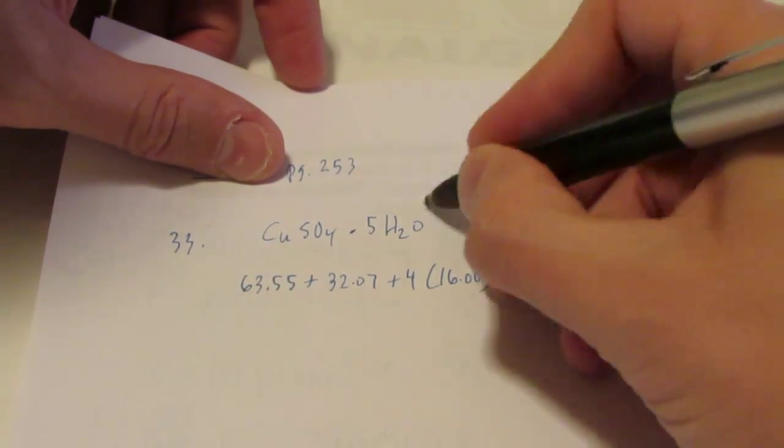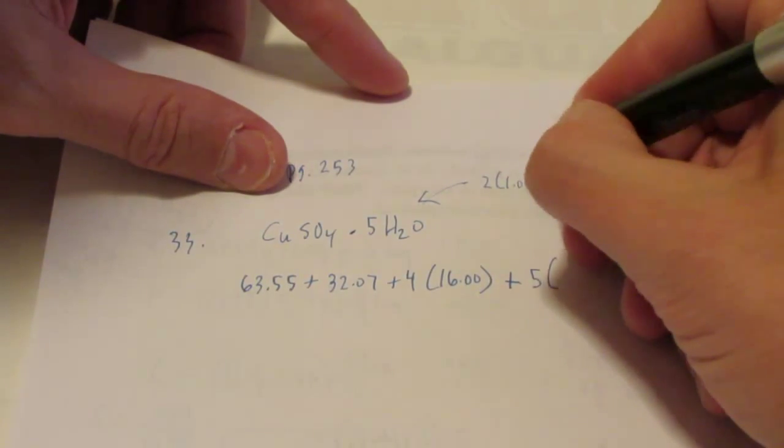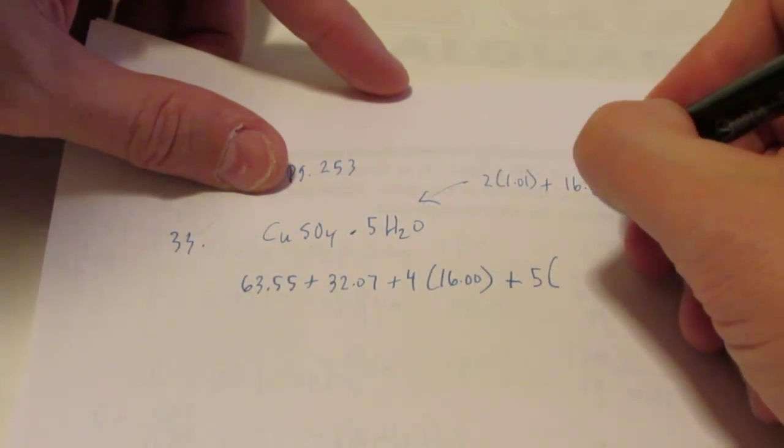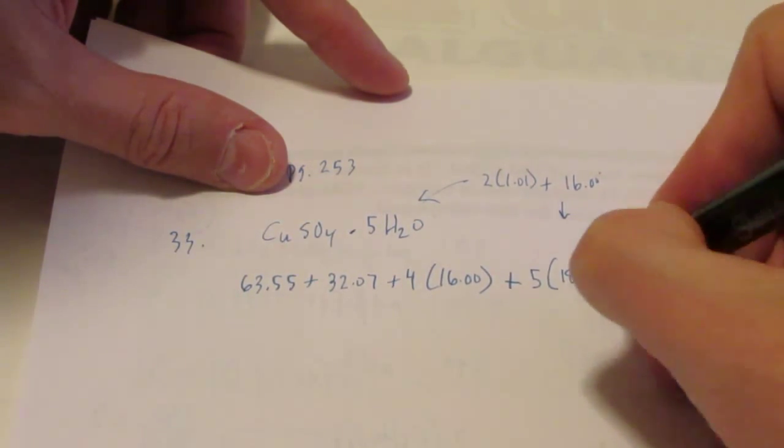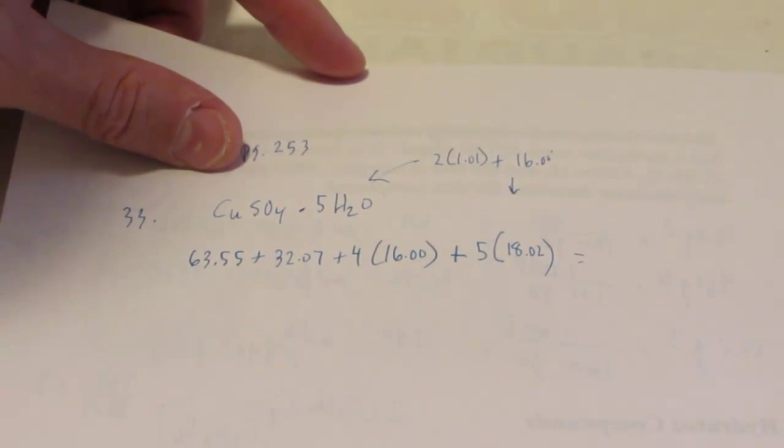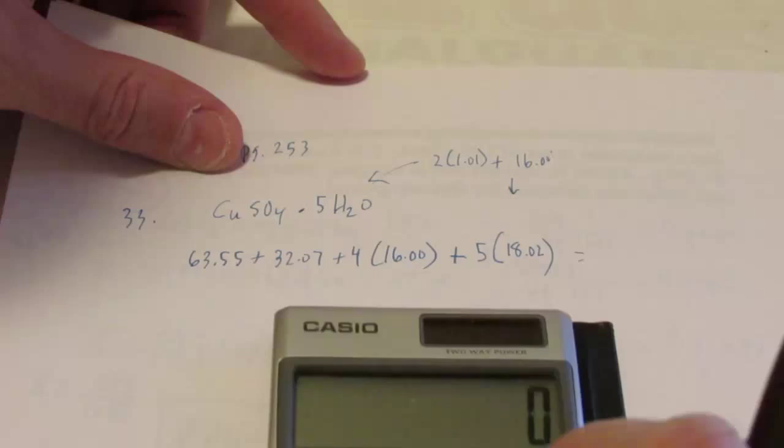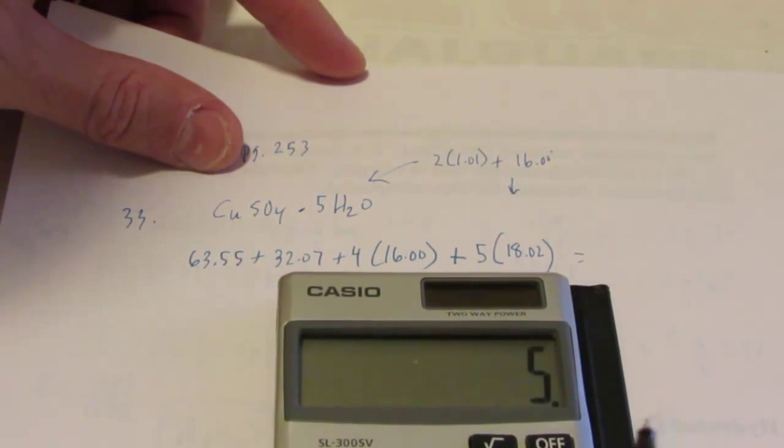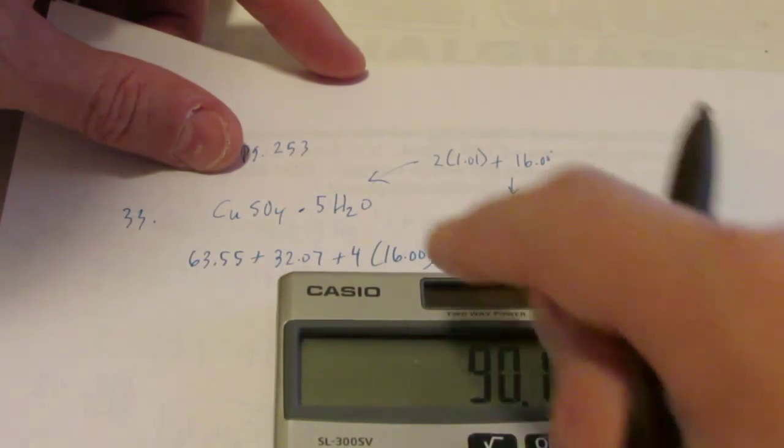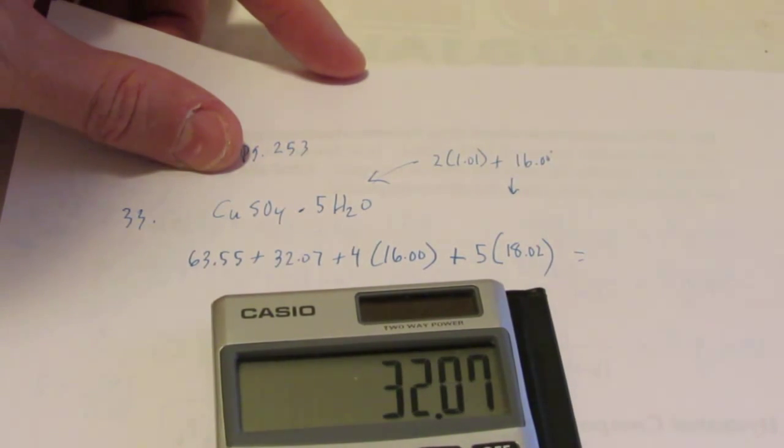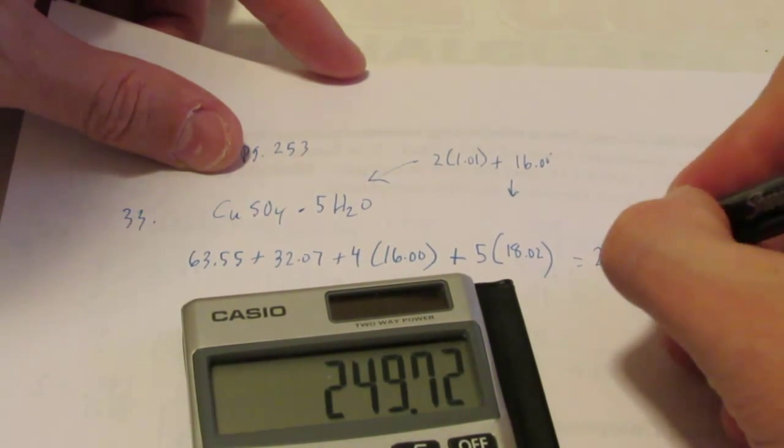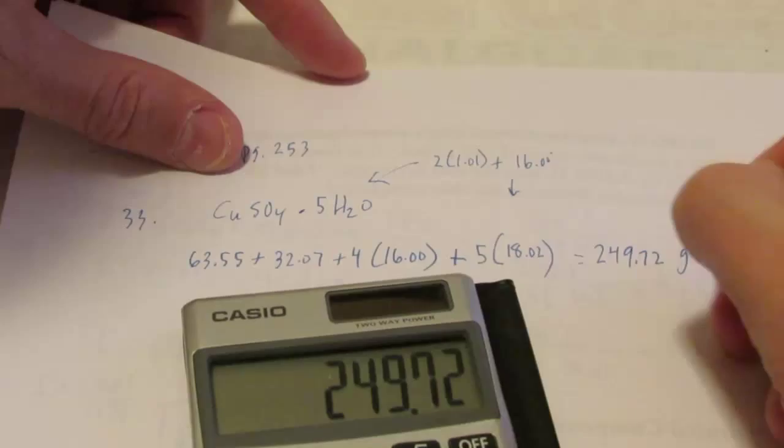So what I do is I add the weight of five waters. So five, and each water, we have two hydrogens plus an oxygen. So each water weighs 18.02 grams per mole. So let's figure out the total weight. So we have five times 18.02, so 90.1 grams of water, plus four times 16 is 64 grams from my oxygens, 32.07 from my sulfur, and 63.55 from my copper. So 249.72 grams per mole.